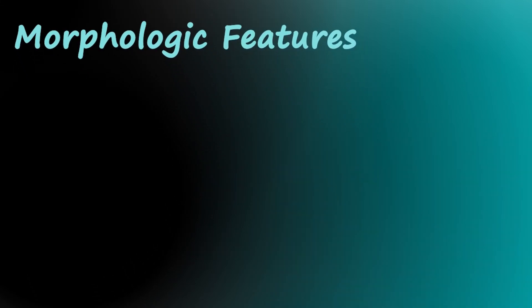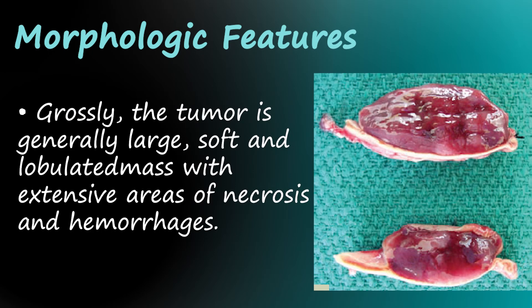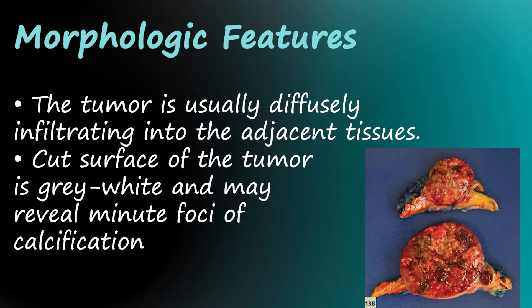Morphologic features. Grossly, the tumor is generally a large, soft and lobulated mass with extensive areas of necrosis and hemorrhages. The tumor is usually diffusely infiltrating into the adjacent tissues. The cut surface of the tumor is gray-white and may reveal minute foci of calcification.